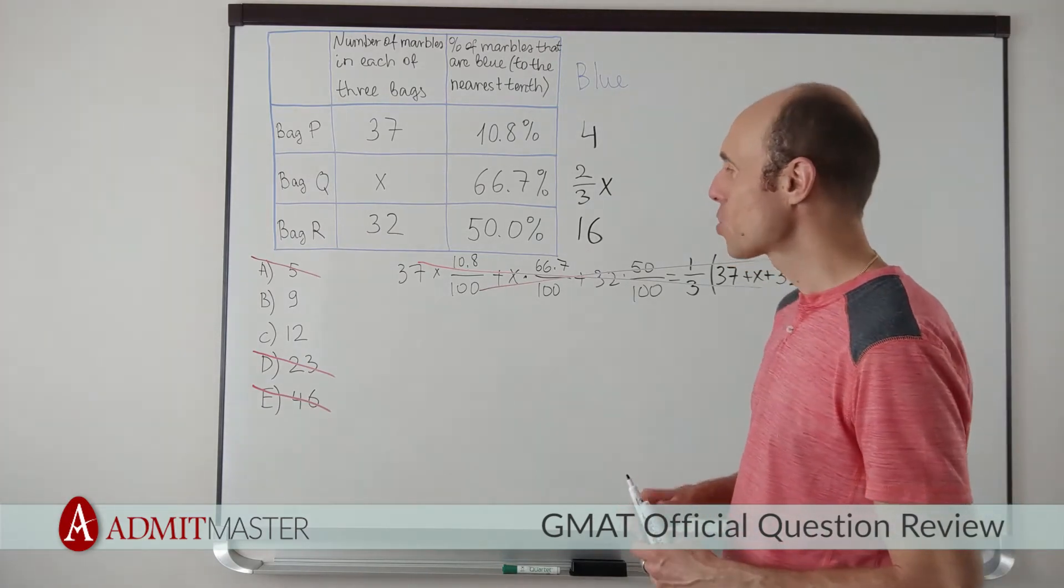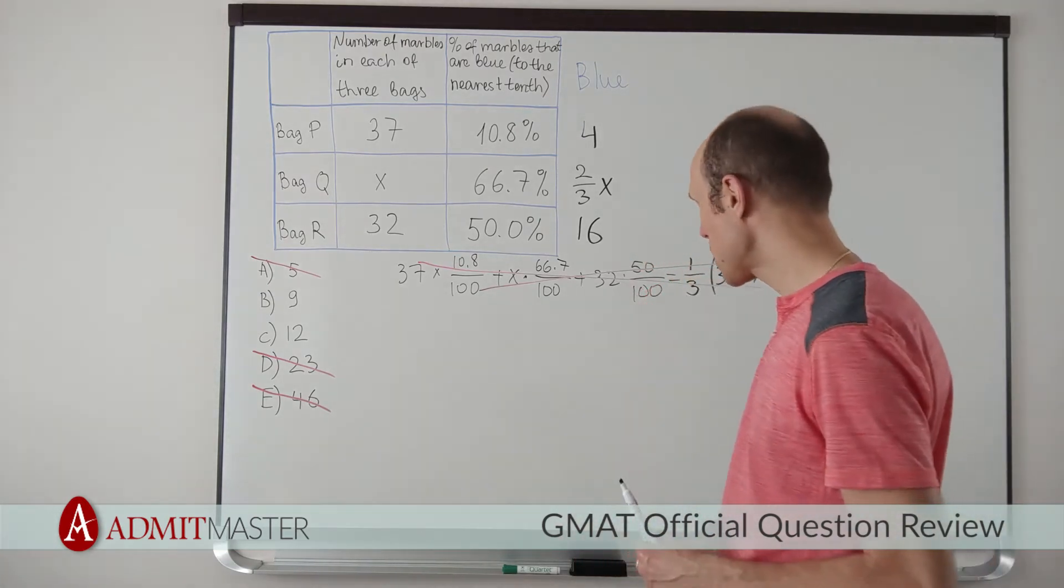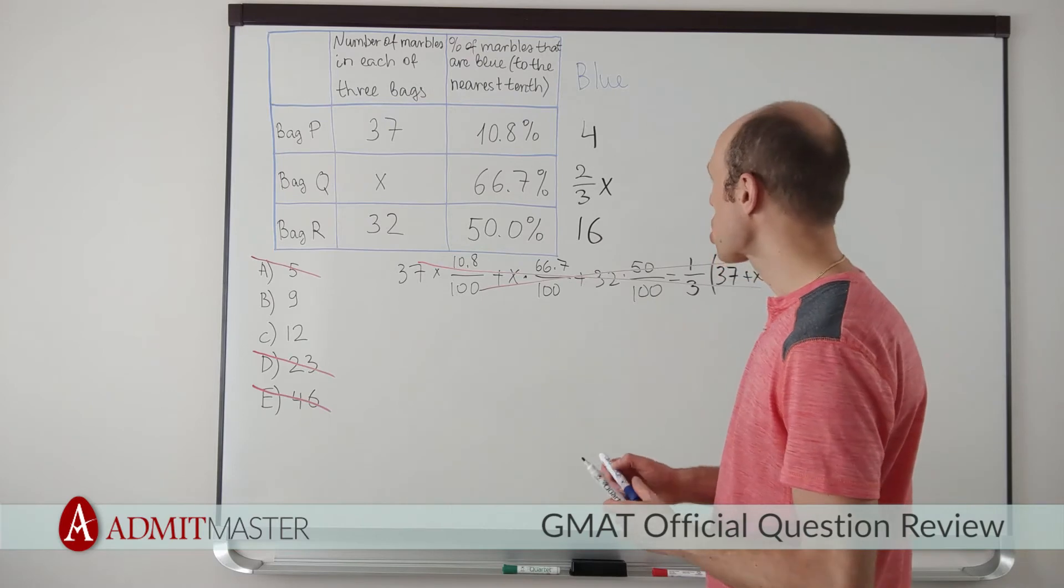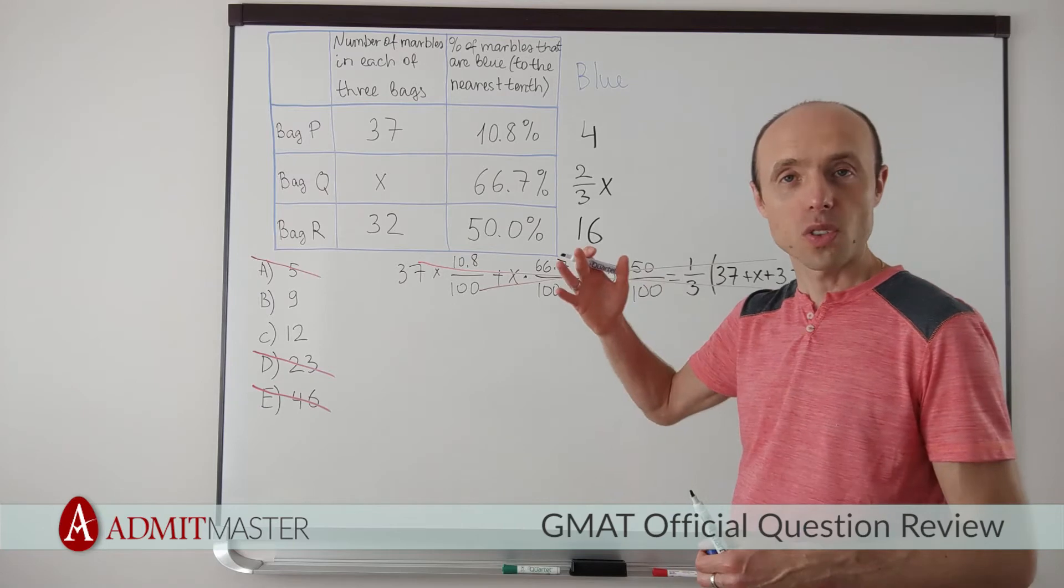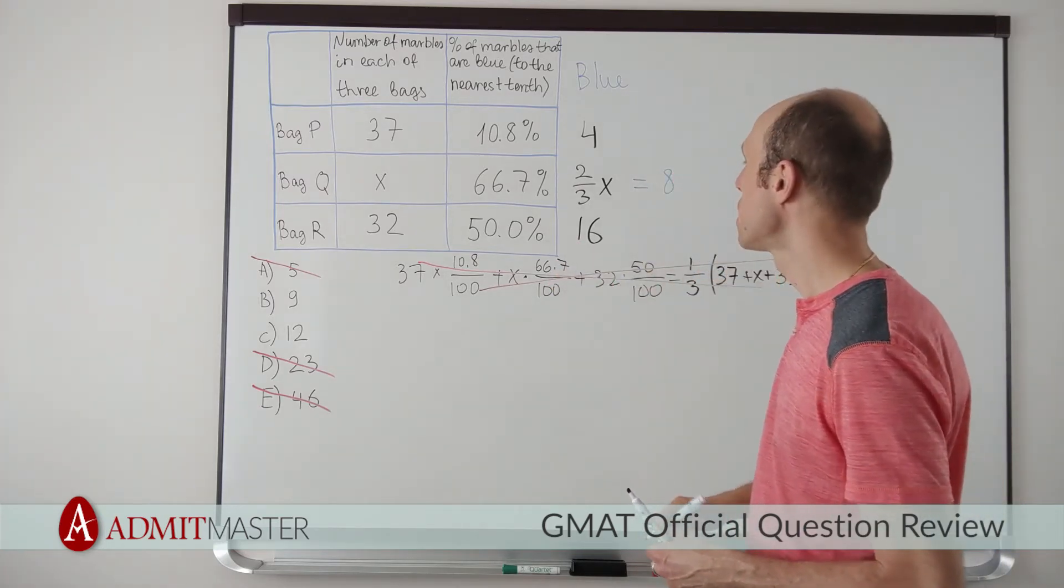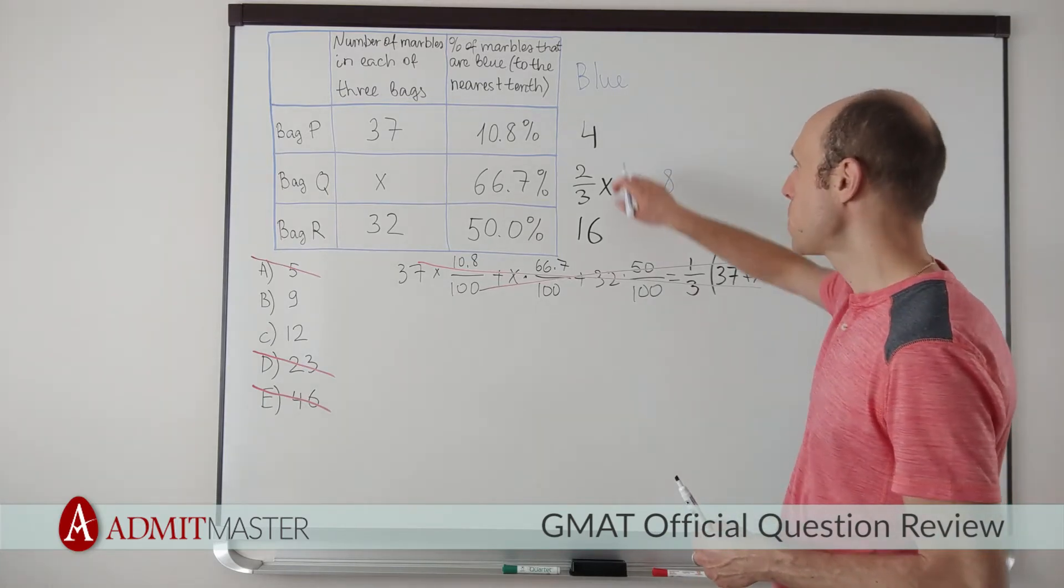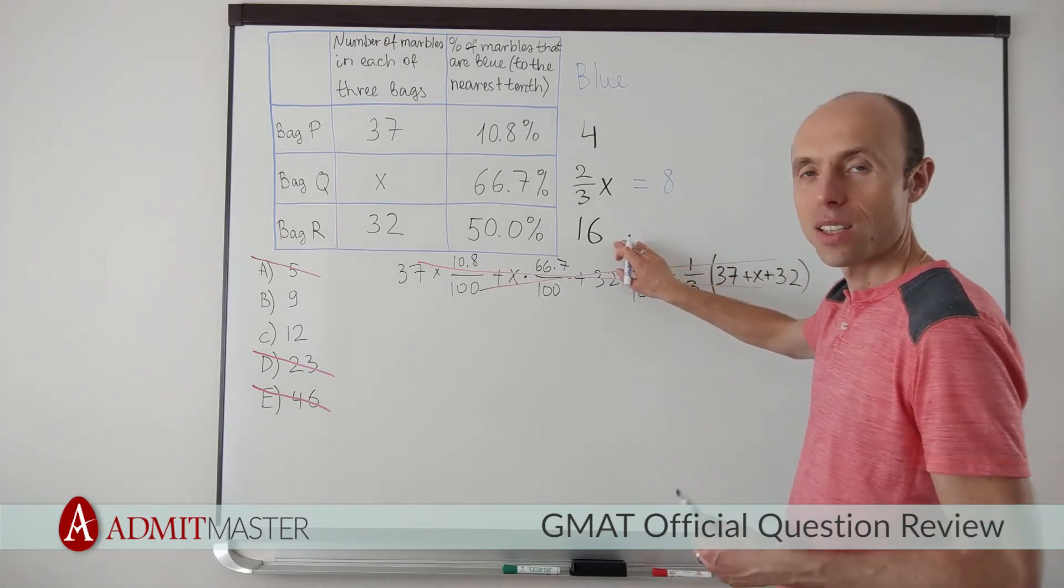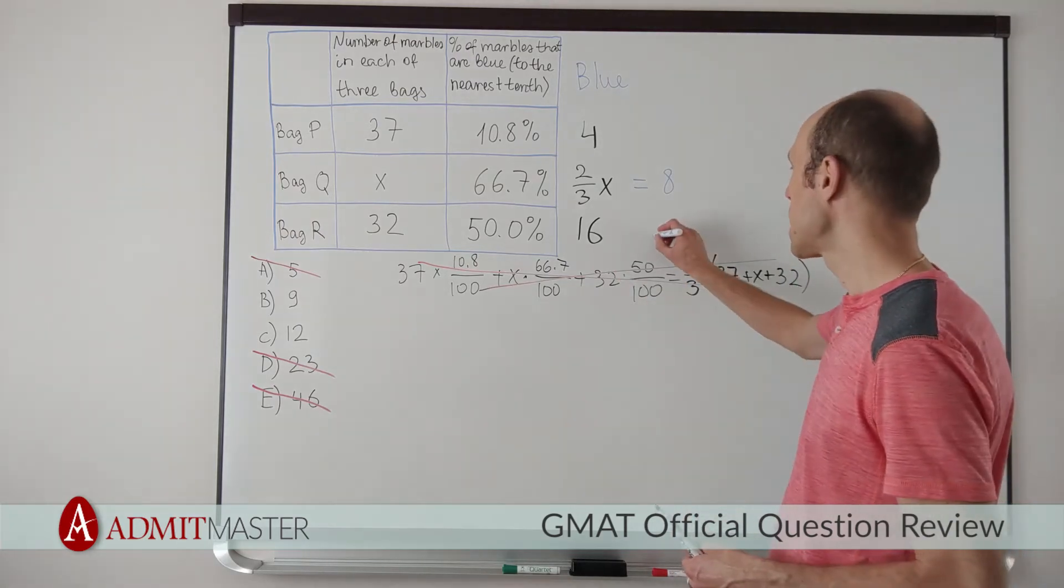So I would like to imagine that x is 12. So here's what's going to happen. If x were 12, then I know that 2 thirds of x, so 2 thirds of 12, is going to be equal to 8. So then what's going to be my total number of blue marbles? 4 plus 16 is 20, plus 8, that is 28.